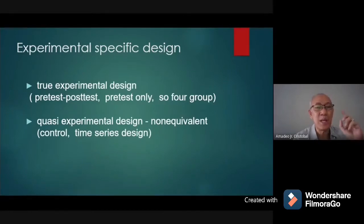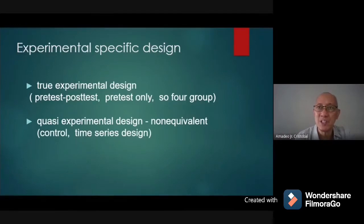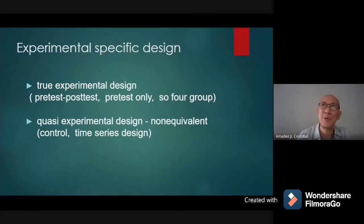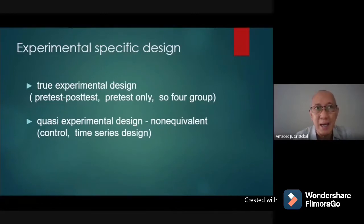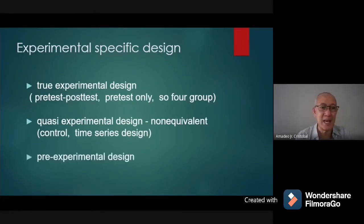Under quasi-experimental design, you can do a control design or a time series design. In the control design, you have only one class with one observation. In the time series design, you conduct observations periodically — for example, in the first week, second week, third week, and fourth week throughout the experiment. The control allows one observation, while the time series involves repeated periodic observations.